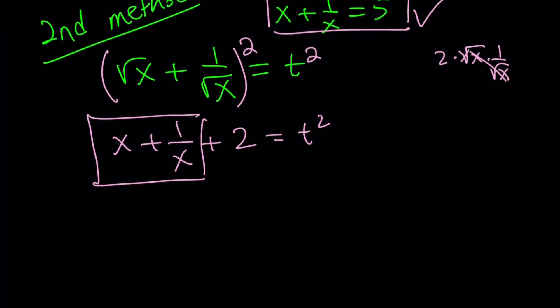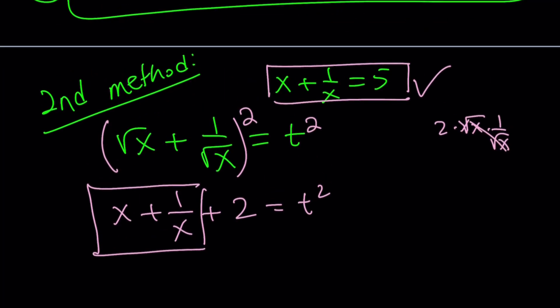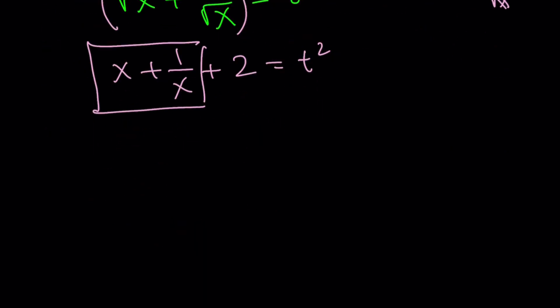But I try to write the problem every time we need it. x plus 1 over x is given as 5. So, this is going to be 5 plus 2 equals t squared, which means t squared equals 7. So, we're split up into two solutions here. t can be root 7. Don't forget there are two real numbers whose square equals 7. And those are root 7 and negative root 7.